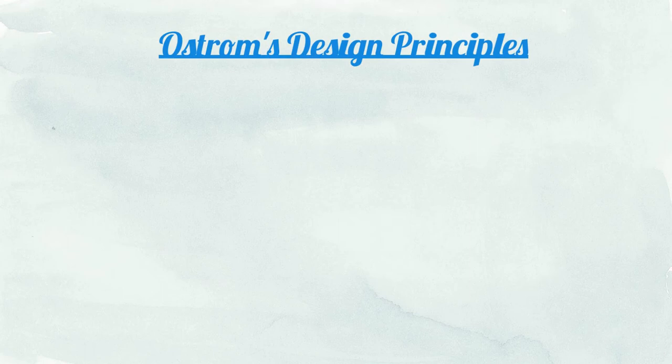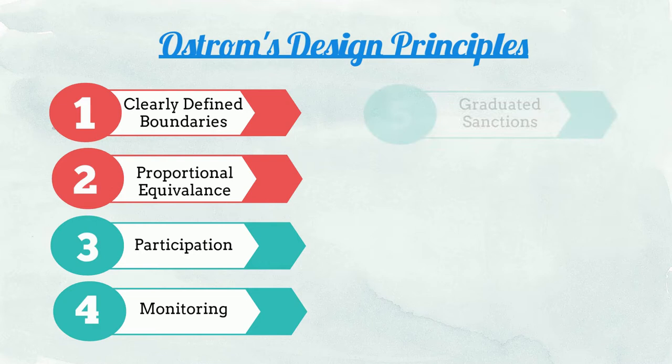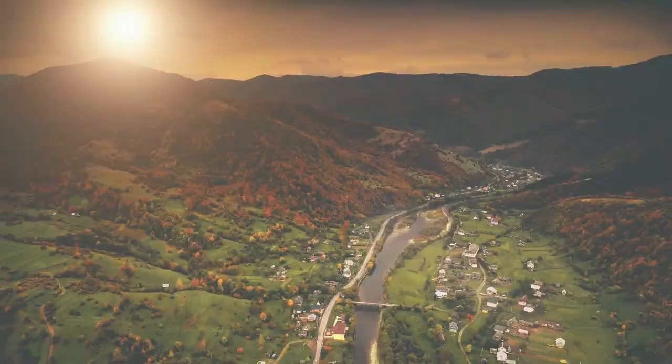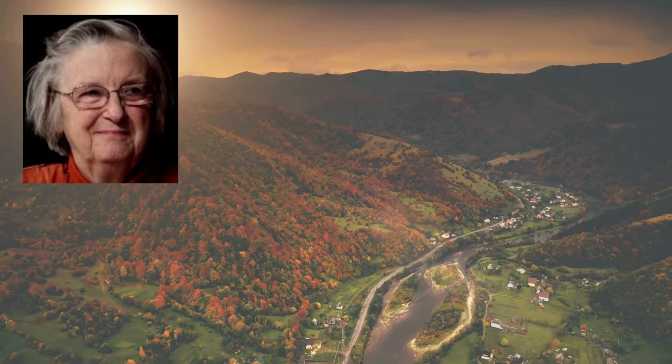In this video, we will learn about Ostrom's design principles and understand what kind of strategies usually work when people organize themselves to make rules to protect the environment. This question was first examined by the scholar Eleanor Ostrom, who studied communities around the world that were directly dependent on some kind of an environmental resource to support their life.